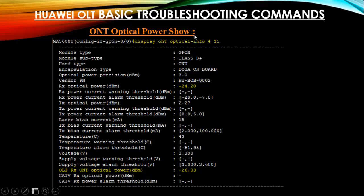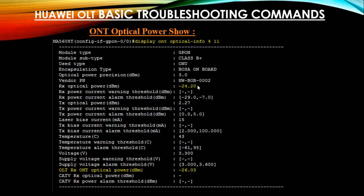Next, GE optical power show. Go to interface mode and run: display ont optical info 4 11 — where 4 is your PON port and 11 is the ONT ID. This shows the ONT RX optical power in dBm — for example, 26.03 dBm. For a Class B+ SFP module the threshold is around -29 dBm, and for a C+ module it may be -32 or -33 dBm depending on your SFP vendor.